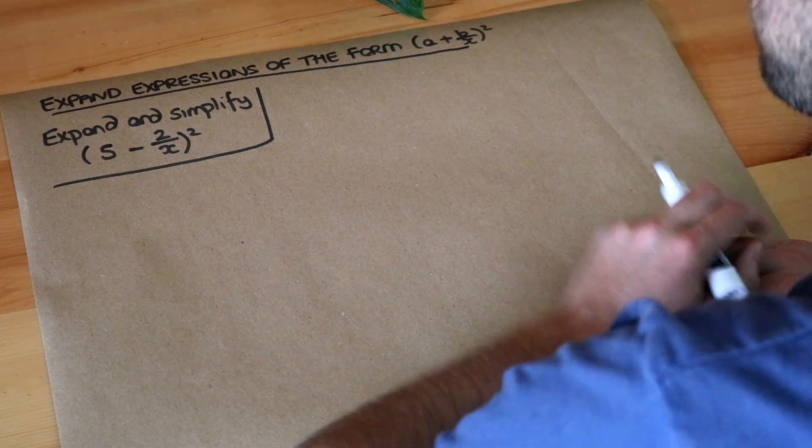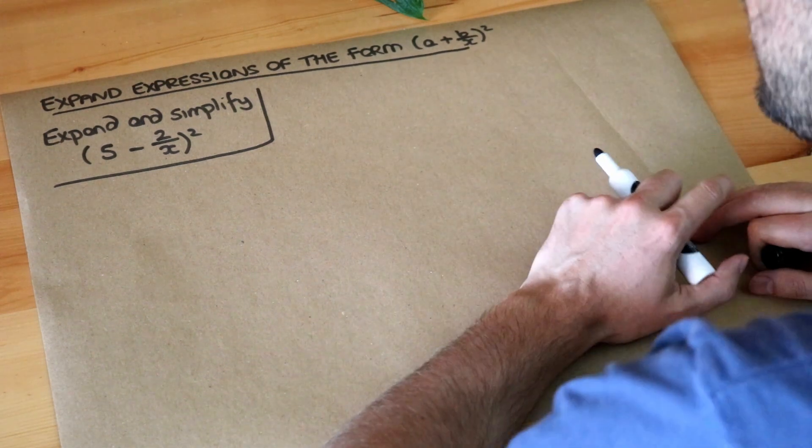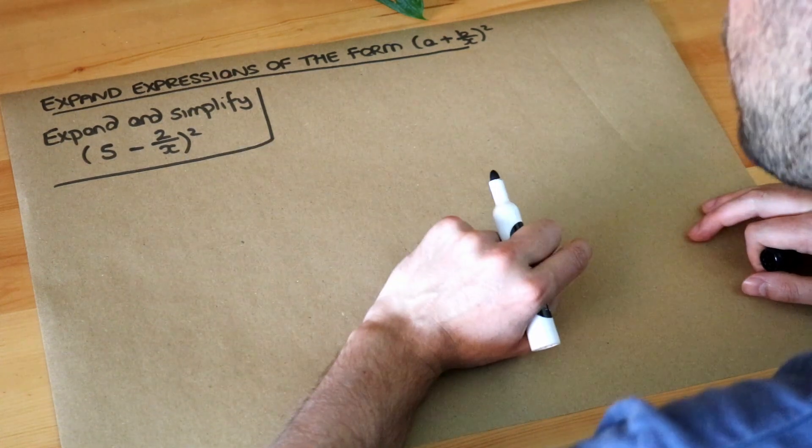Hello and welcome to this DotsRoth video on expanding expressions of the form a plus b over x all squared. So we want to expand and simplify 5 minus 2 over x all squared.